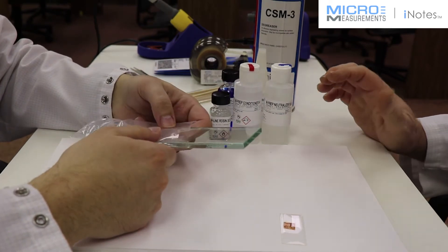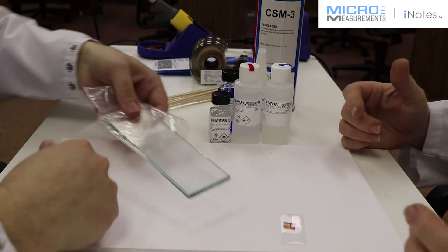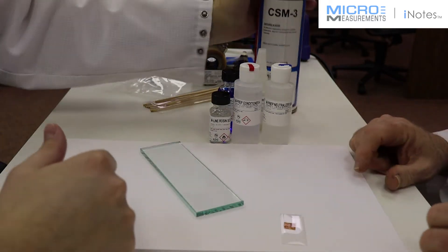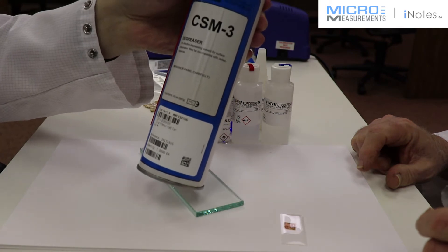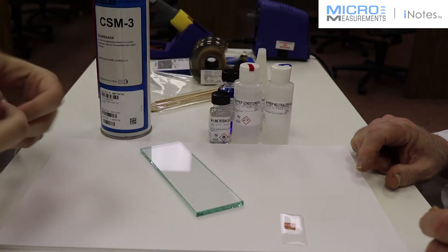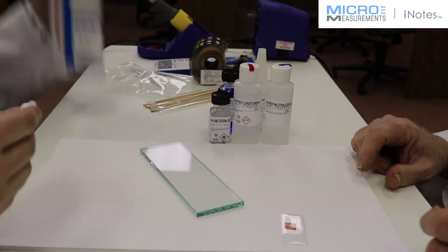So, first thing we'd have to do is degrease it. Let's look at CSM3, our degreaser, and spray that on into a gauze sponge and let's scrub the surface of our glass.